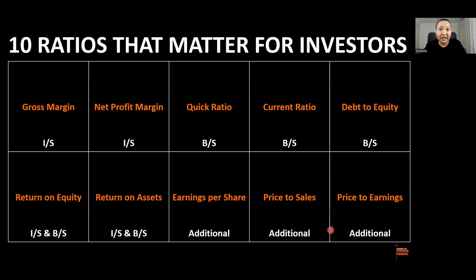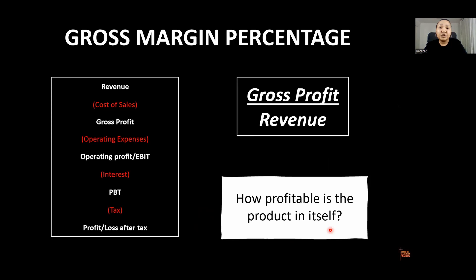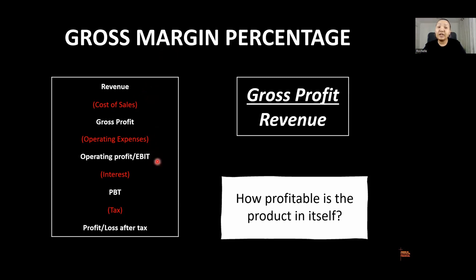Let's jump into our very first ratio: the gross margin. When you see the word 'margin,' it means the number was divided by revenue. So any number on the income statement divided by revenue is called a margin — you can have a gross profit margin, an operating margin, or a net profit margin.